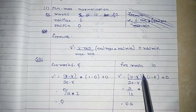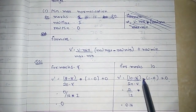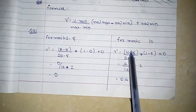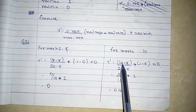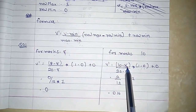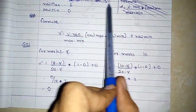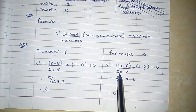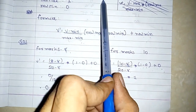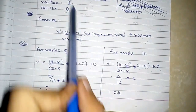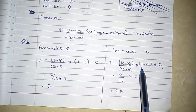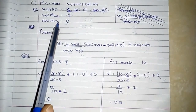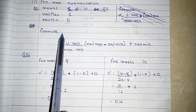For marks = 10: (10 - 8) / (20 - 8) × (1 - 0) + 0. Here V is 10, minimum is 8, maximum is 20, new max is 1, and new min is 0. You will get 2/12, which equals approximately 0.16.